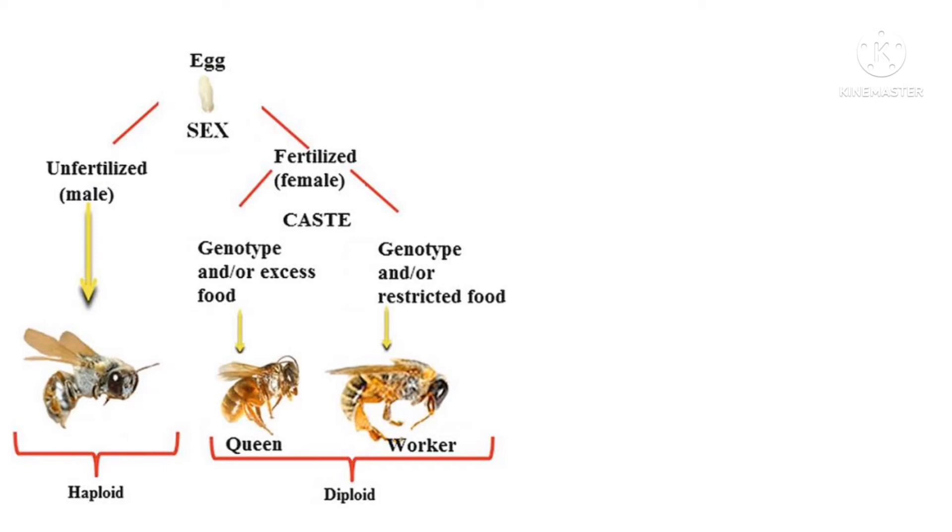Similarly, in the drone, they are haploid and have developed sex organs. Hence, they are capable of fertilizing the female queen.